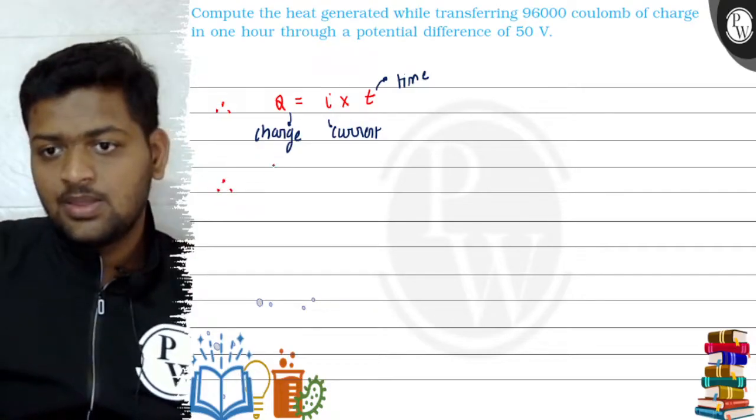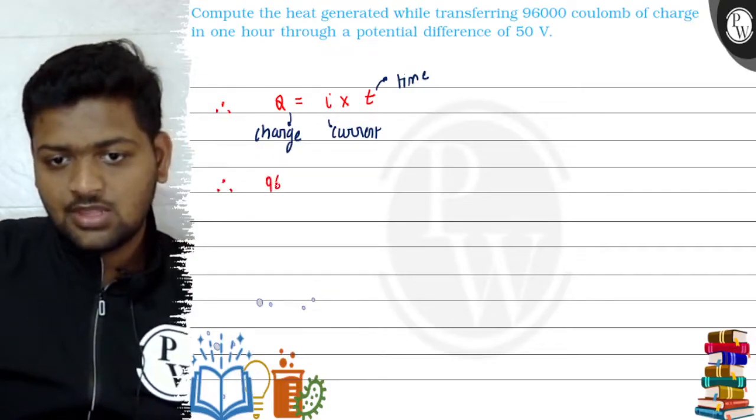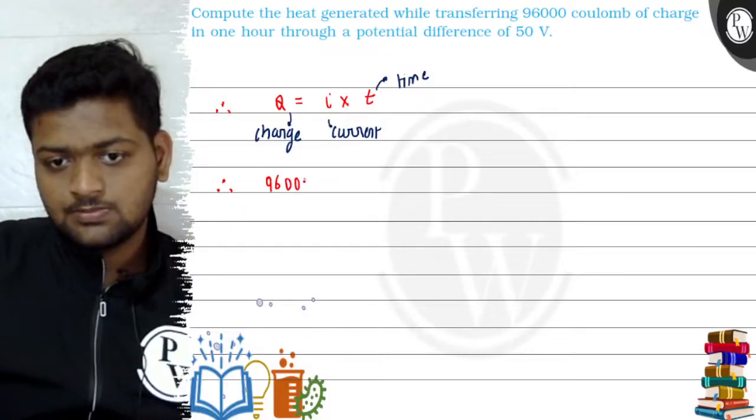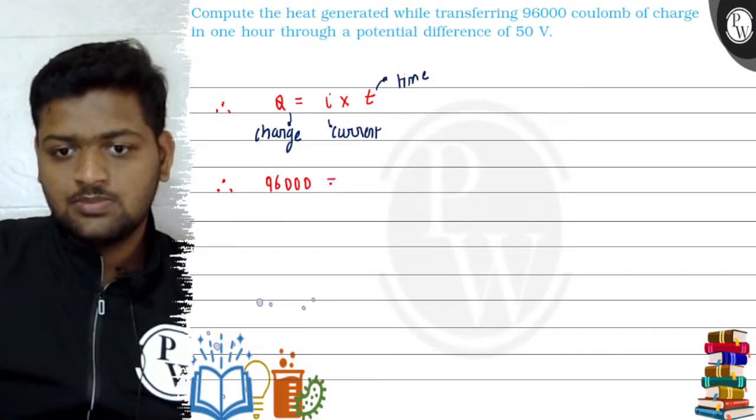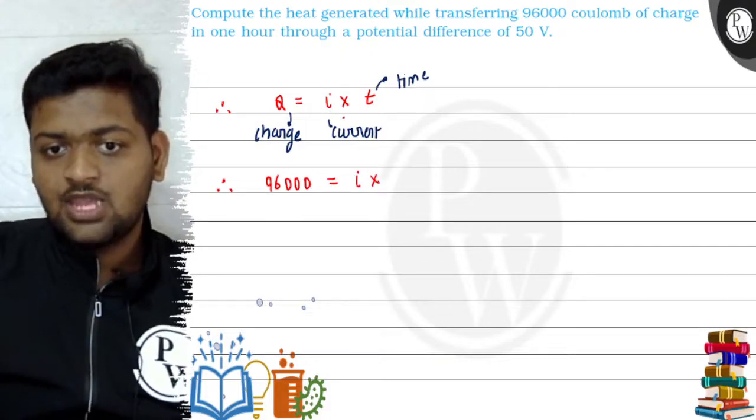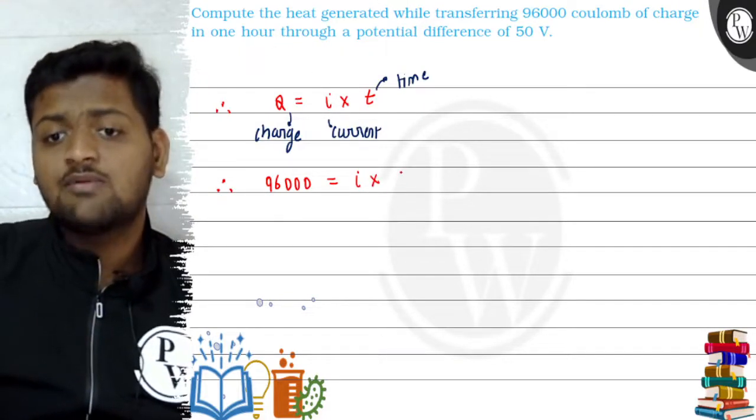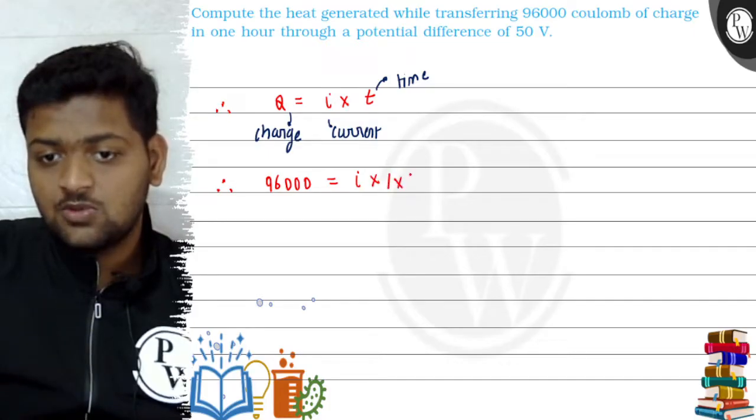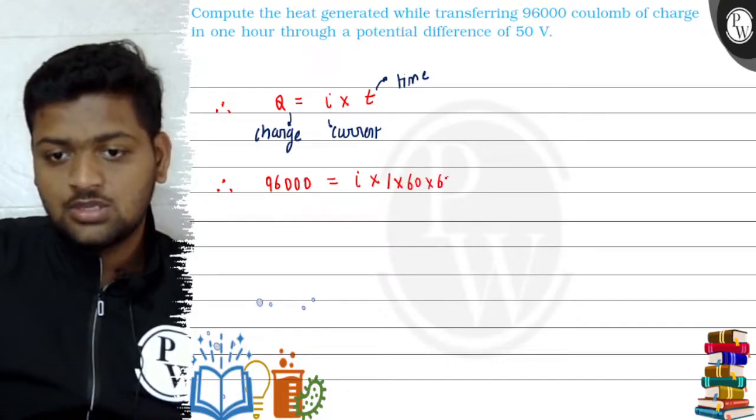Okay, now our current is what we have to find out. Time is given as one hour but we will convert it into seconds that is 1 into 60 into 60. Okay.